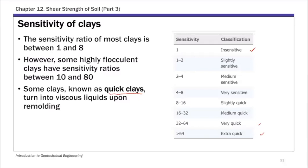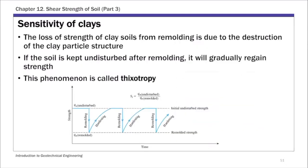And this is the case for that Norway landslide case we talked about back in chapter 4. So remember that Rissa landslide. So these clays are actually very sensitive clay, they're quick clay. So a little bit of disturbance causes the clay to turn into viscous fluids. Finally, there's another concept. So basically the loss of strength of clay from remolding is due to the destruction of clay particle structure. But if you keep clay undisturbed after remolding, it will gradually regain strength. So this is shown on this figure here.